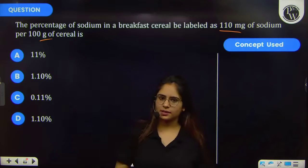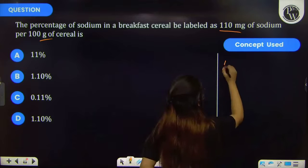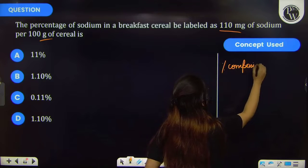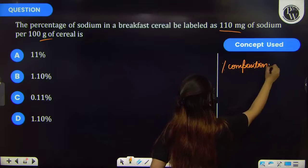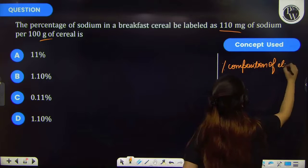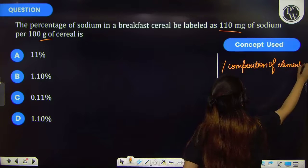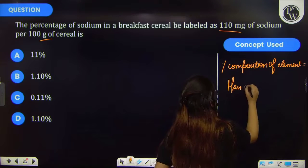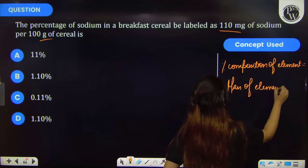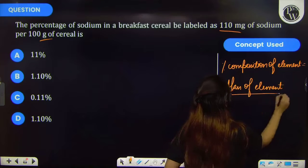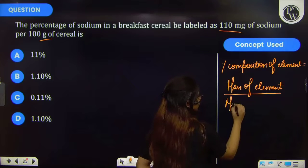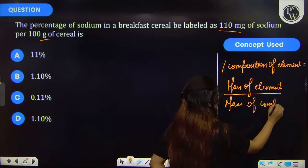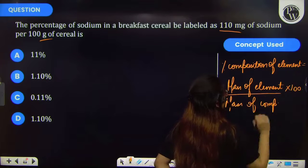So let's discuss the key concept of this question. Percentage composition of element is mass of the element upon mass of the compound into 100.